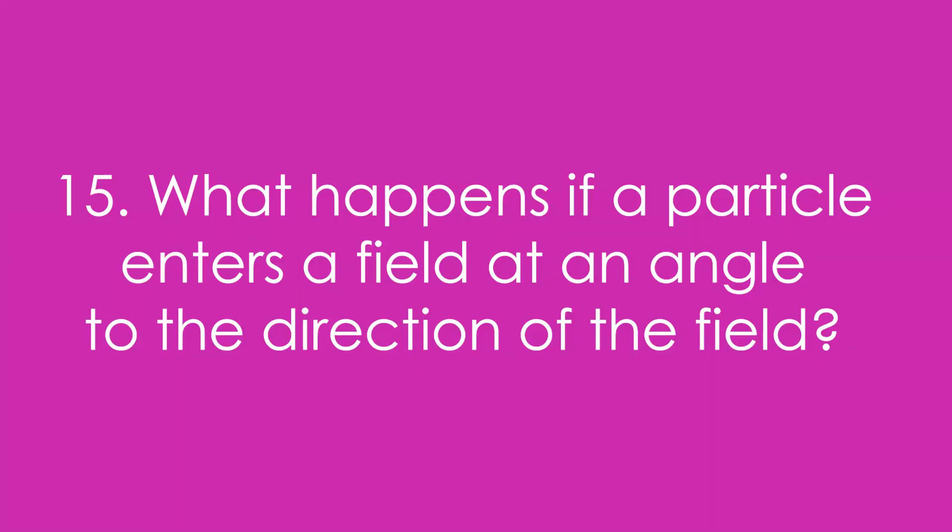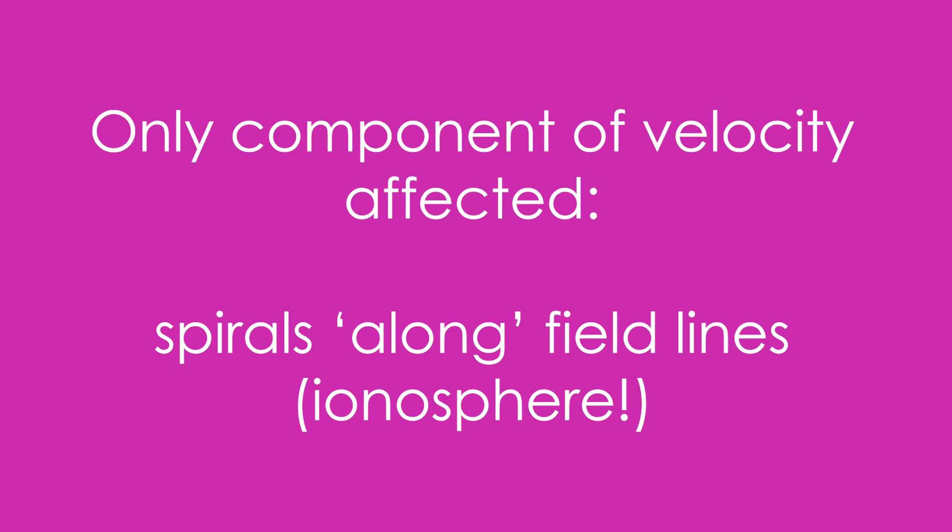Question 15: What happens if a particle enters a field at an angle — not perpendicularly — to the direction of the field? Only a component of the velocity is affected, so the particle will spiral along the field line.